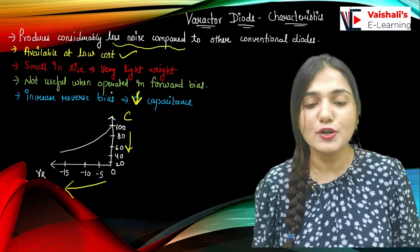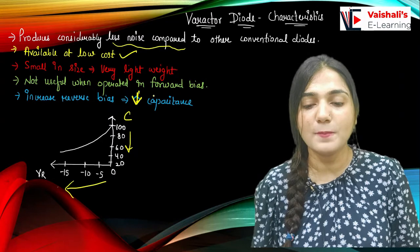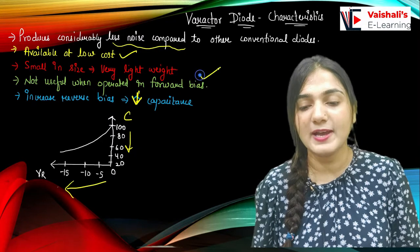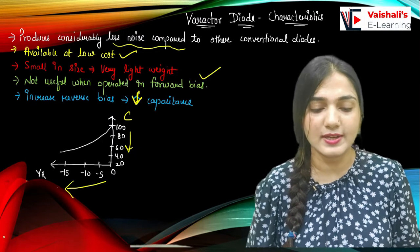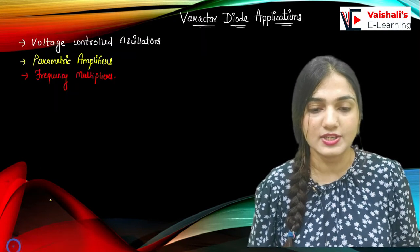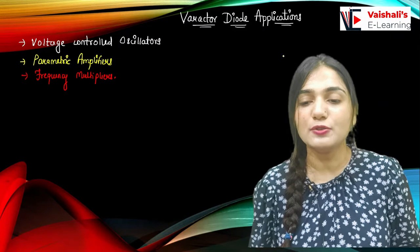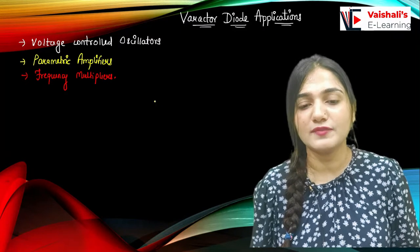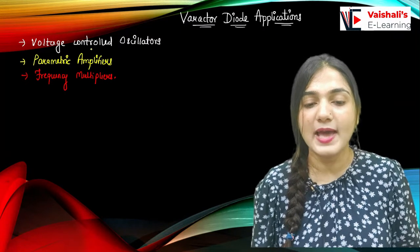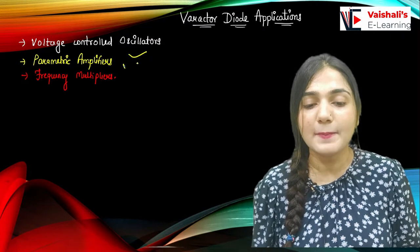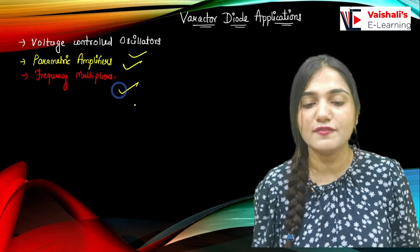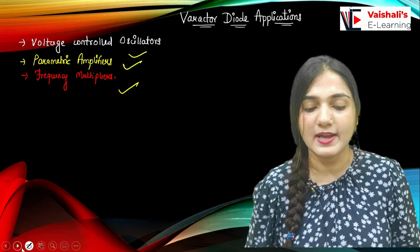It is not useful when operated in forward bias — in forward bias it works like a normal diode. The applications of the varactor diode include: voltage-controlled oscillators, parametric amplifiers, and frequency multipliers.